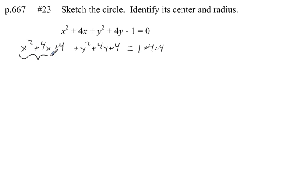Now these three terms can be factored as x plus 2 times x plus 2, which I can write as x plus 2 squared. Plus, these three terms can be factored as y plus 2 times y plus 2, so y plus 2 squared. Equals, let's combine these three to make it equal 9.